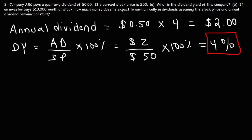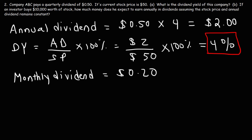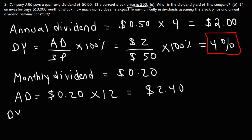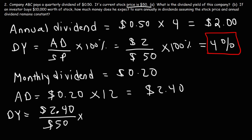Before moving to Part B, let's consider a related example. If the company paid a monthly dividend of $0.20, assuming the stock price is still $50, what would the dividend yield be? There are 12 months in a year, so the annual dividend is $0.20 times 12, which equals $2.40. The dividend yield is $2.40 divided by $50 times 100%, which is 0.048 times 100%, giving a dividend yield of 4.8%. That's how you calculate the dividend yield if you know the monthly dividend.